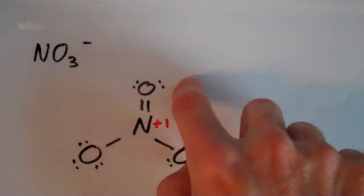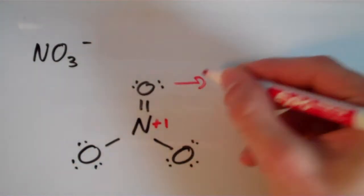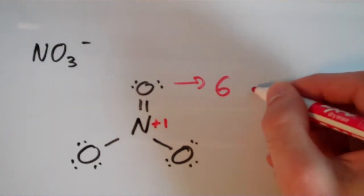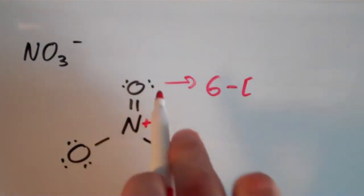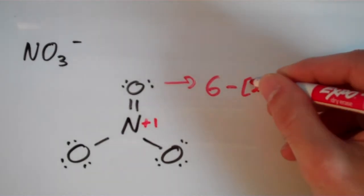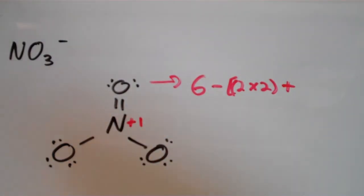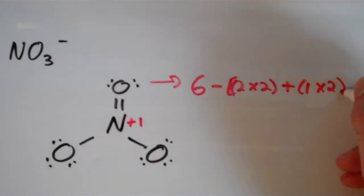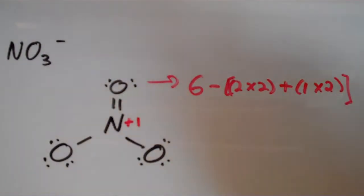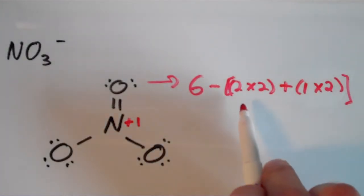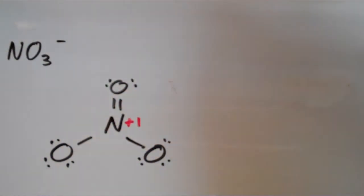For the doubly-bonded oxygen: six valence electrons minus formal electrons. It has two lone pairs — two times two equals four — and two shared pairs — one times two equals two — totaling six. Six minus six equals zero. This is similar to the oxygen in water: two lone pairs and two shared pairs, giving a formal charge of zero.